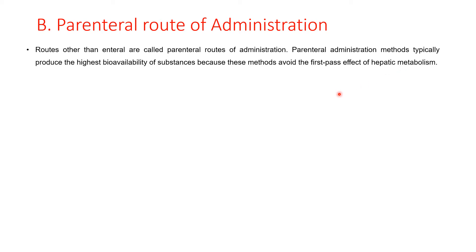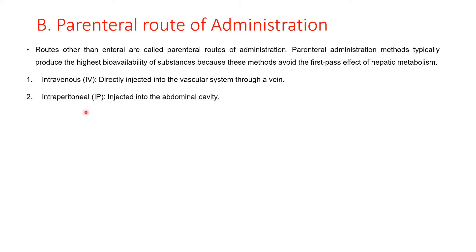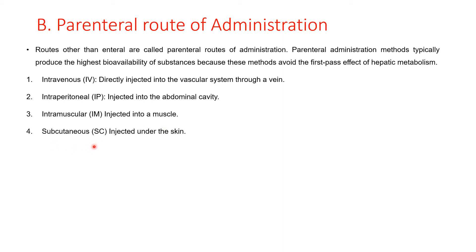Now we will see the different parenteral routes of administration. The first is intravenous, where the drug is directly injected into the vascular system through a vein. Next is intraperitoneal, where the drug is injected into the abdominal cavity. Then intramuscular, where the drug is injected into the muscle. Subcutaneous, where the drug is injected under the skin. Then intradermal, where the drug is injected between the layers of the skin.